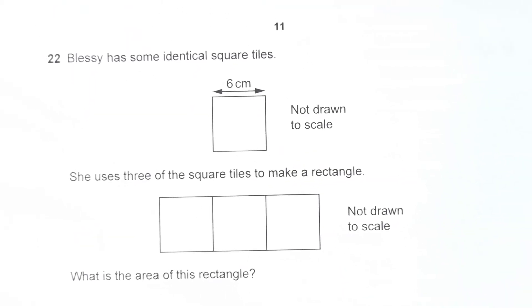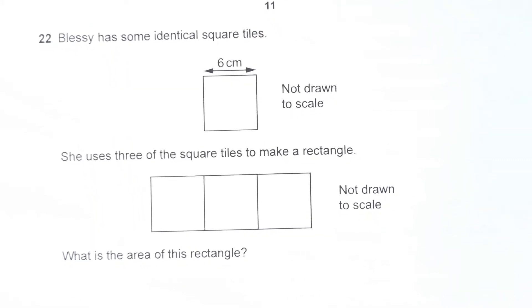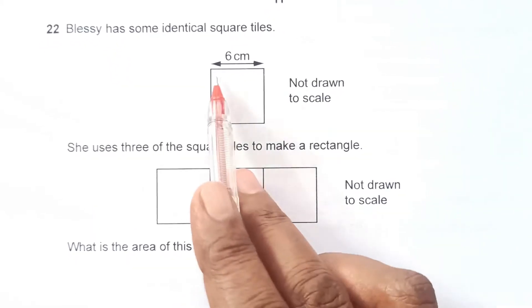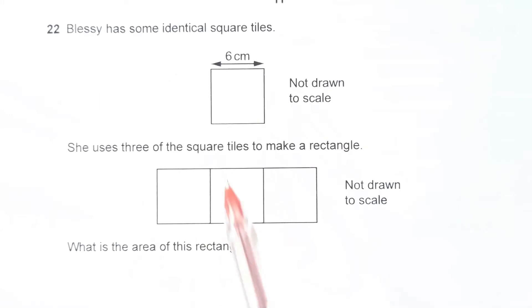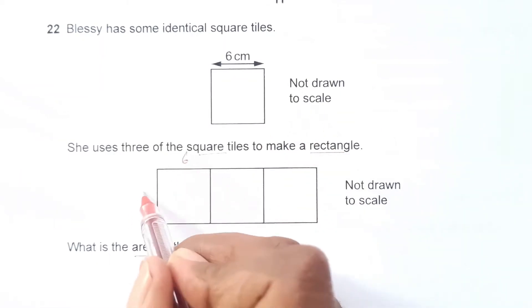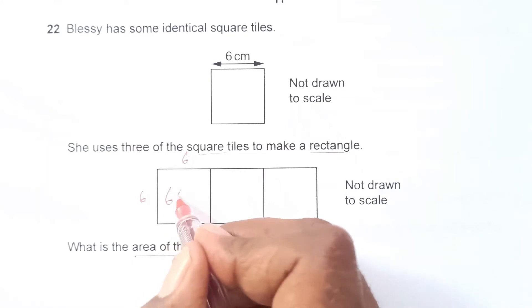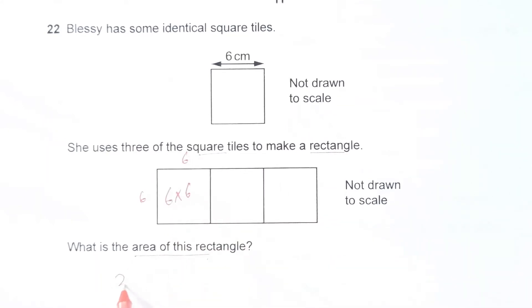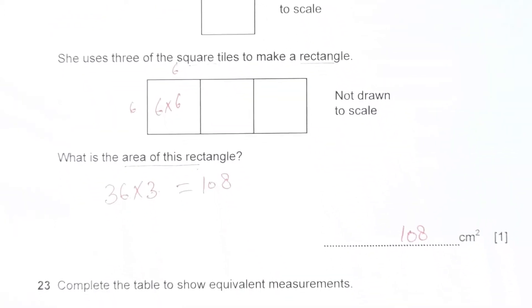Question 22. Blassie has some identical square tiles. You can see we have this square here, 6 centimeters by 6 centimeters. She uses 3 of these square tiles to make a rectangle. What is the area of this rectangle? Area of 1 tile is 6 times 6 which is 36, and we have 3 such tiles. So times 3. 6 times 3 is 18, 3 times 3 is 9 plus 1, so 108 centimeters squared.